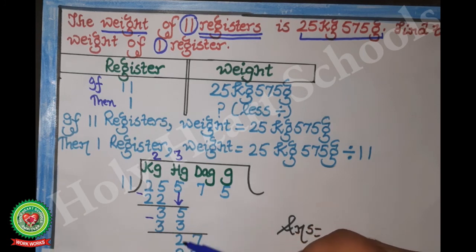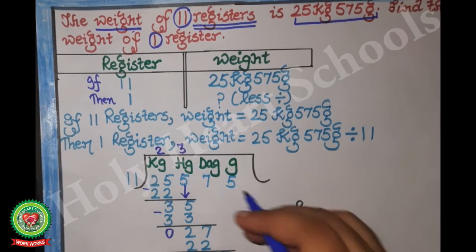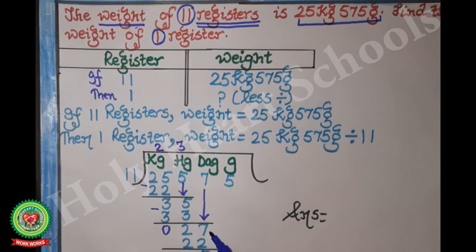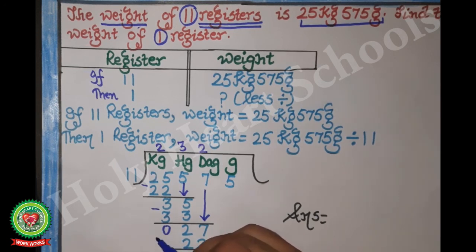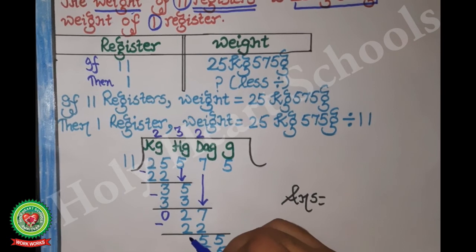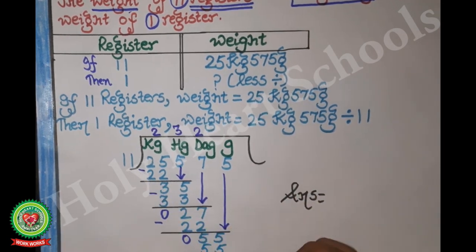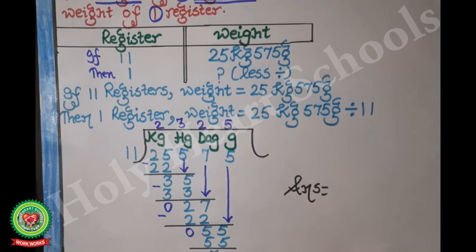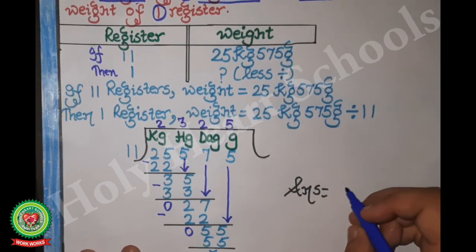On the 11 table, 35 doesn't come exactly; take 33. 11 × 3 = 33. After subtracting we get 2. Bring 7 down to get 27; take 22. 11 × 2 = 22. After subtracting: 5. Bring 5 down to get 55. 11 × 5 = 55. After subtracting we get 0. The answer is 2 kg and 325 grams.